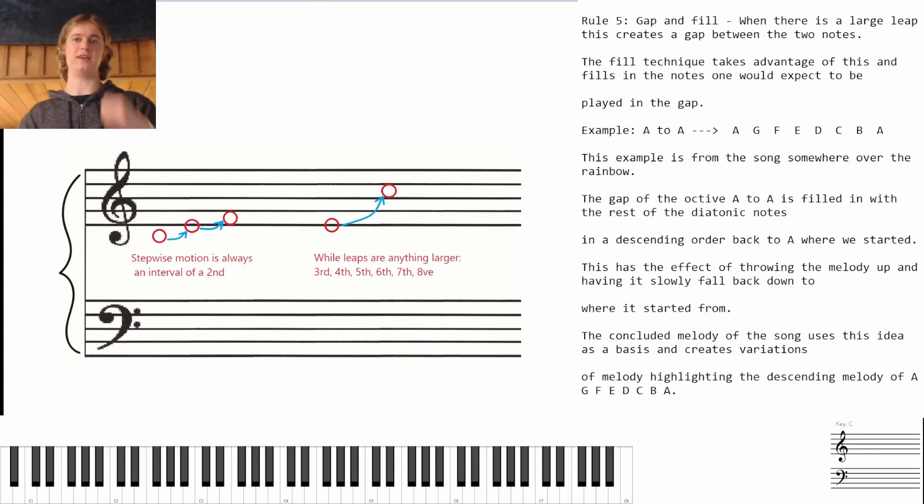Rule number five: gap and fill. When there's a large leap, this creates a gap between the two notes. The fill technique takes advantage of this and fills in the notes one would expect to be played in the gap. For example, let's say we have a high A and it leaps down to a low A. So the notes that you would expect to fill in that gap are G, F, E, D, C, and B, leading you back to that A again from that original A.